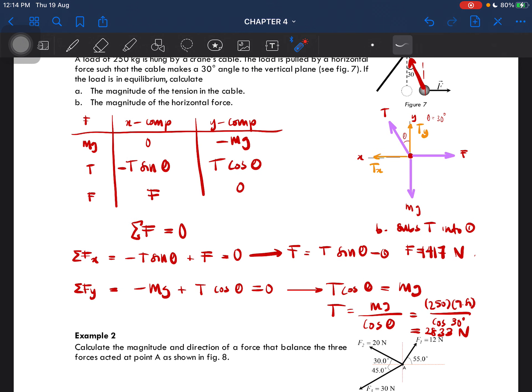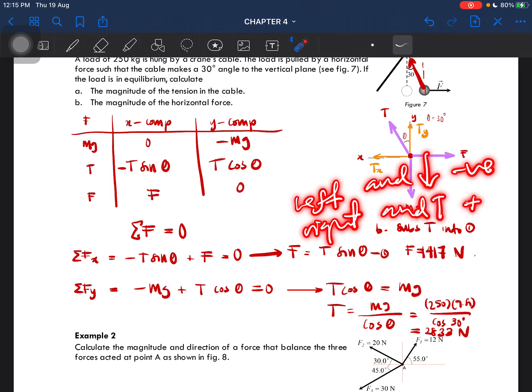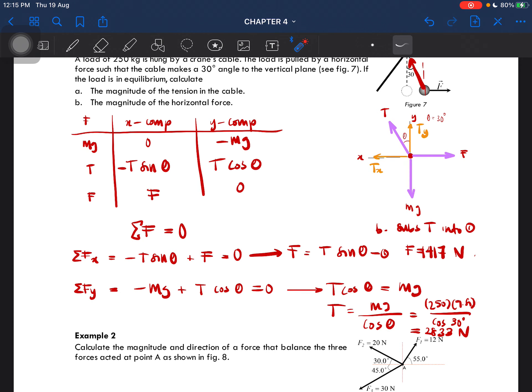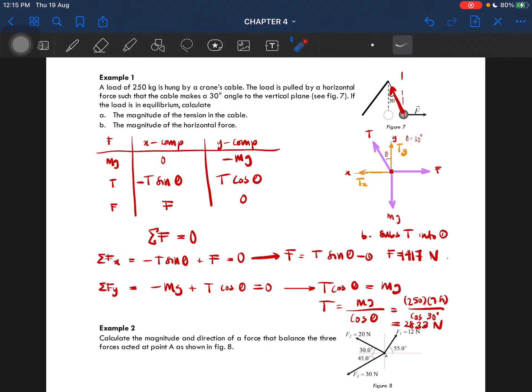So firstly, try to draw a table, label each force, and then resolve it into x and y components. Make sure to consider the direction: whether it is going to the left or going to the right. Remember, going to the left and going downwards is negative; going to the right and above is positive. That is how you solve example number one.